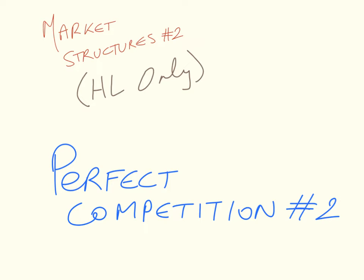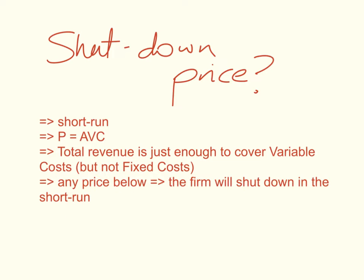This is the second video in the Market Structures series in the IB Microeconomics Higher Level Only component, and this will be part two of perfect competition. When talking about perfectly competitive firms, there are two concepts that are very important to remember: the first is the concept of the shutdown price, and the second is the concept of the break-even price.